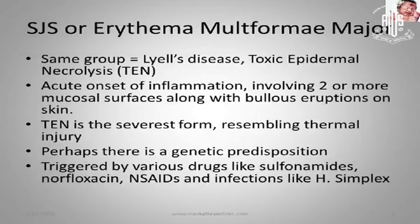These are some of the names bandied about for essentially the same disease. It's an acute onset of inflammation involving two or more mucosal surfaces. Before you call it SJS or Stevens-Johnson, it must involve not only the eye but some other part — usually the mucous membranes of the mouth, sometimes the entire gastric tract, and sometimes the skin.